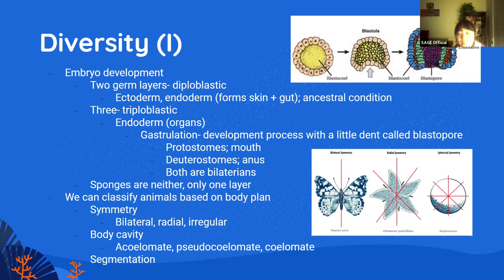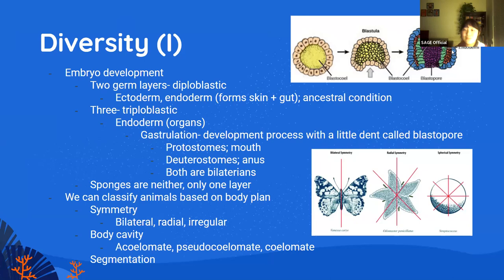In triploblastic animals, we further classify them into two groups based on a stage called gastrulation. During gastrulation, the three germ layers start to form, and there's a little dent called the blastopore. In protostomes, the blastopore eventually becomes the mouth, while in deuterostomes, it becomes the anus. Something to keep in mind is that in both triploblastic groups, the animals are bilaterians — split down the middle and symmetrical. Like the butterfly in the diagram: if you fold it in half, it's the same on both sides.